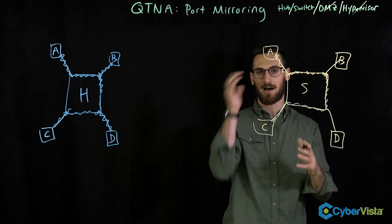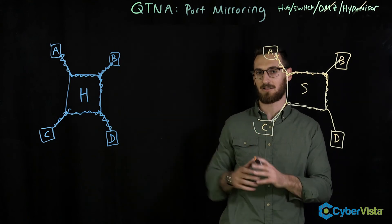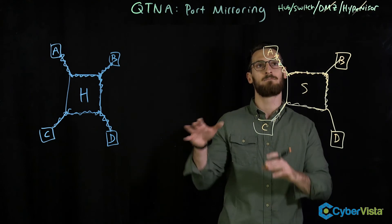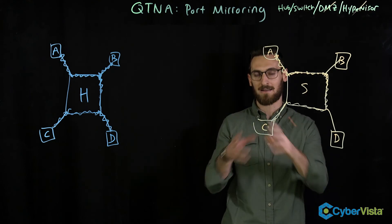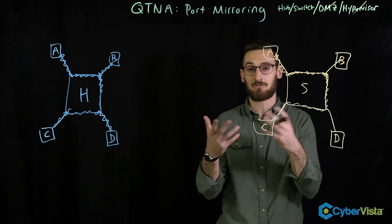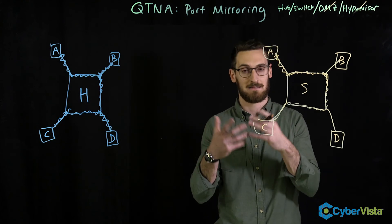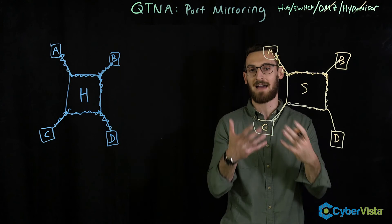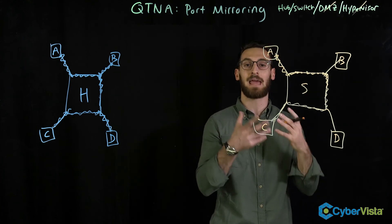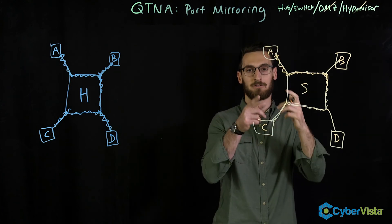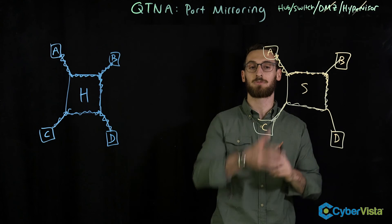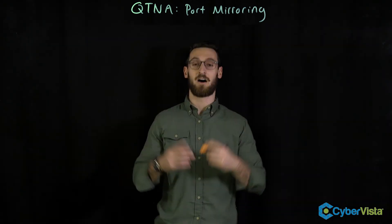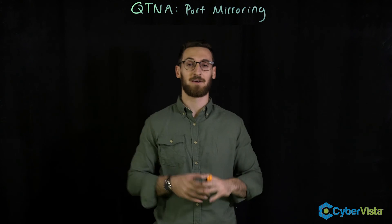That's really the answer to the question. A hub sends all data out all ports at all times — so port mirroring is essentially its default behavior. But with a switch, we don't have that feature, so we need to explicitly enable port mirroring on a switch to get a copy of the traffic sent to other hosts or devices.